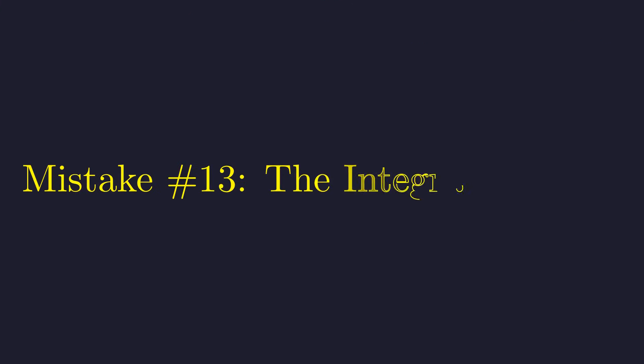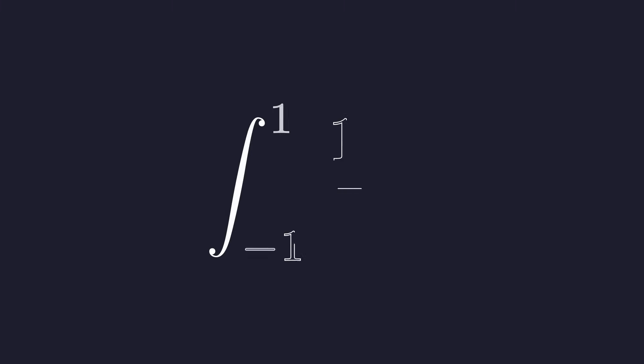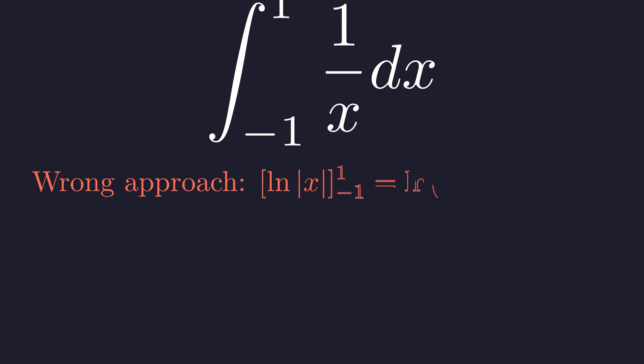A common mistake in calculus is applying the fundamental theorem without checking its conditions. Consider the definite integral of one over x from negative one to one. A student might find the antiderivative and plug in the bounds, getting an answer of zero.